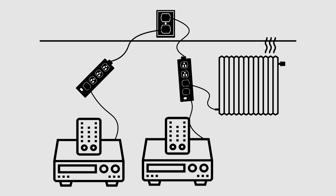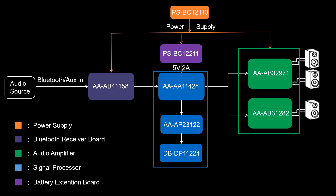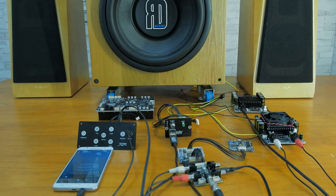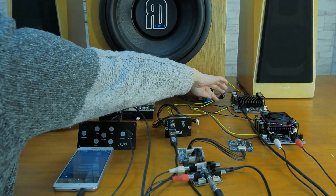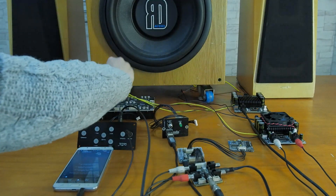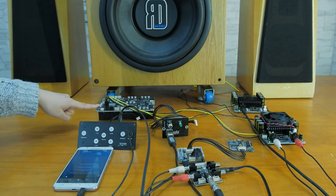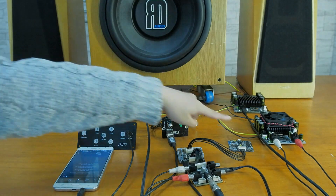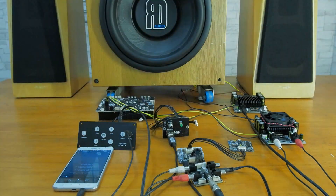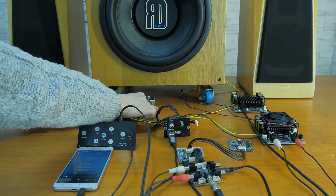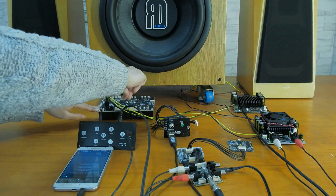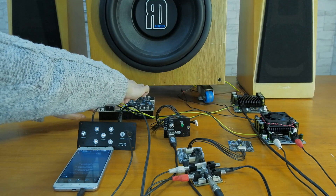This is especially true in audio systems. Next, we will build a Bluetooth audio system. We will use our 5S lithium battery board to power the Bluetooth board and two amplifier boards at the same time, to see if there is noise.